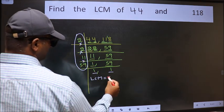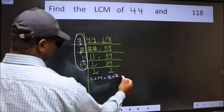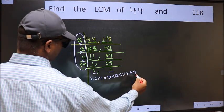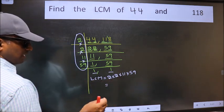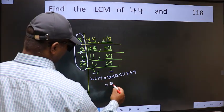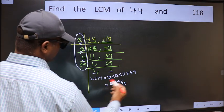That is 2 times 2 times 2 times 11 times 59. When we multiply these numbers, we get 2596, which is our LCM.